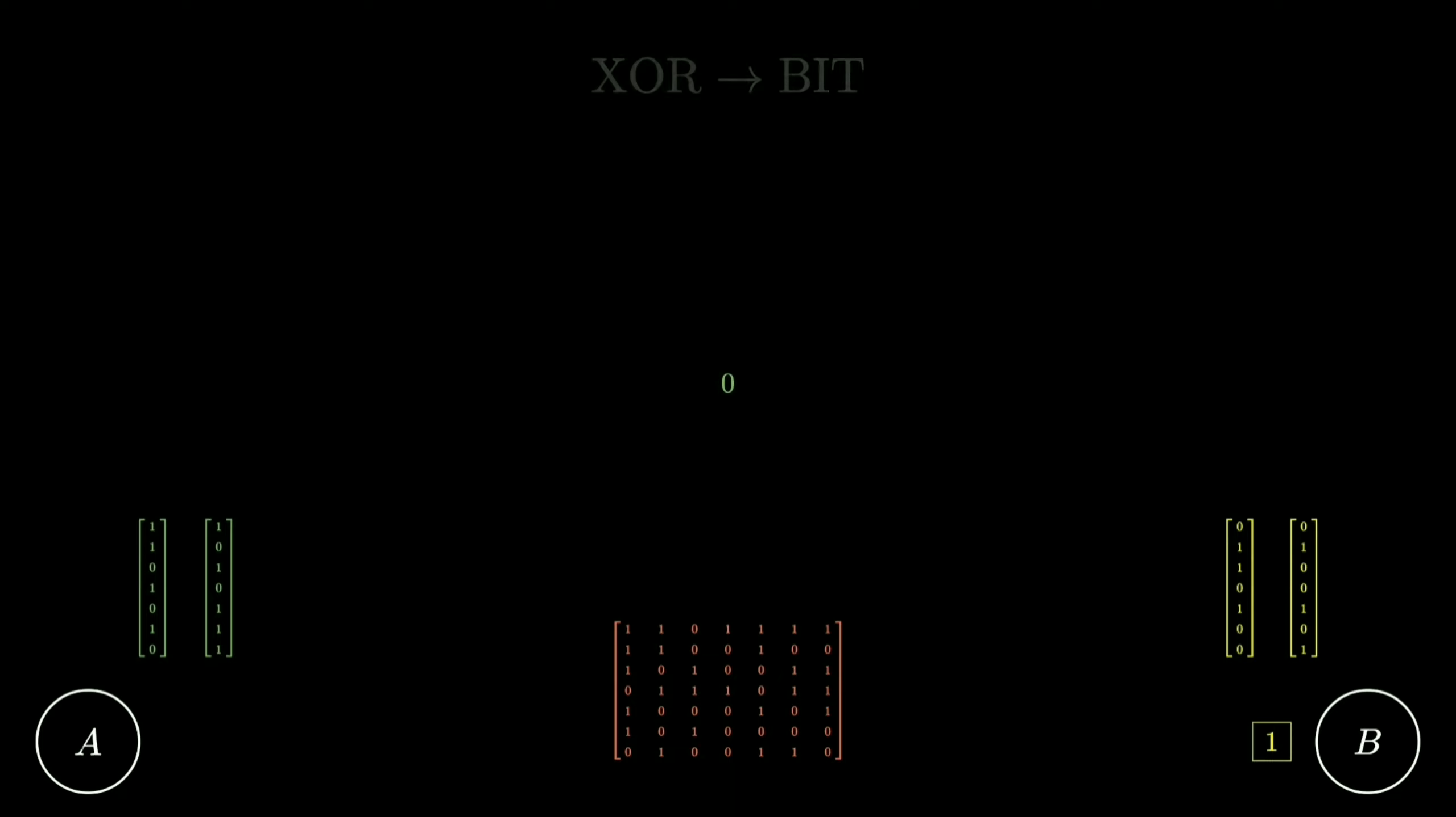Unfortunately, the common key is not common. At the site of B we get 0, at the site of A we get 1. As you can see, the example bit in the end is mismatched.